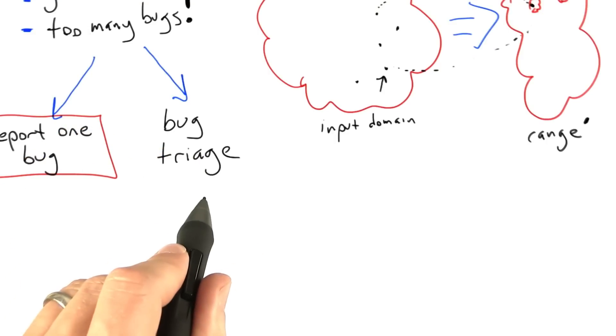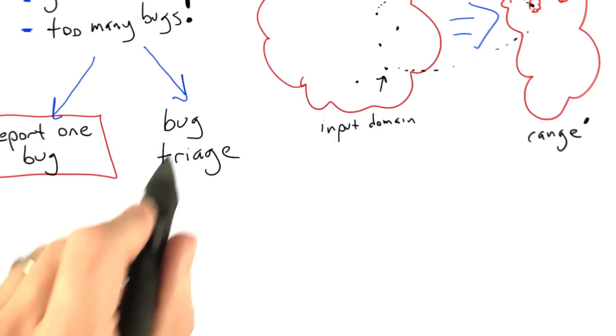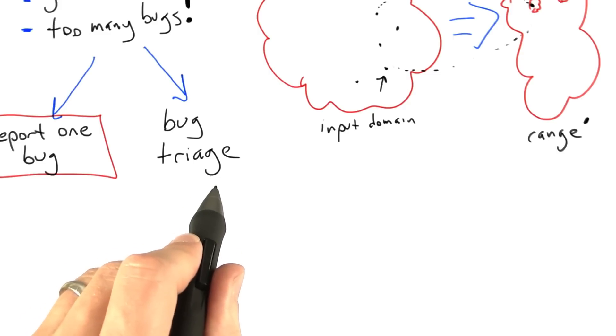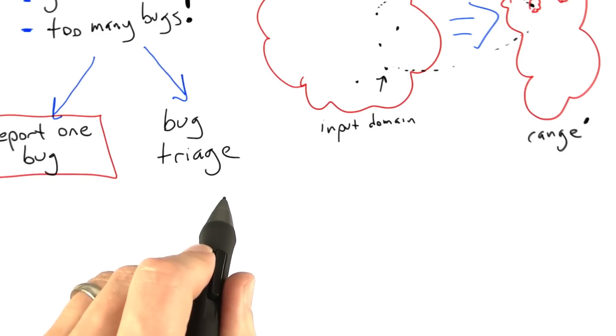Bug triage is the process by which the severity of different bugs is determined and we start to disambiguate between different bugs, basically trying to get a handle on which bugs we can report in parallel.